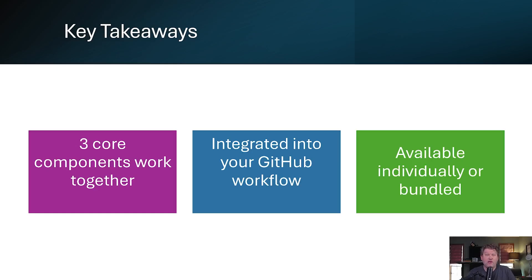To wrap up, GitHub Advanced Security gives you three essential security capabilities: code scanning for vulnerabilities, secret scanning for credential protection, and dependency review for supply chain security. These work together in your existing GitHub workflow to catch security issues early and keep your code secure. Whether you need all three components or want to start with just secret protection or code security, GHAS provides a developer-friendly approach to application security that doesn't slow down your development process.